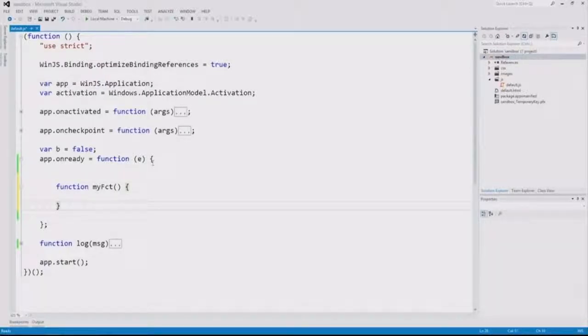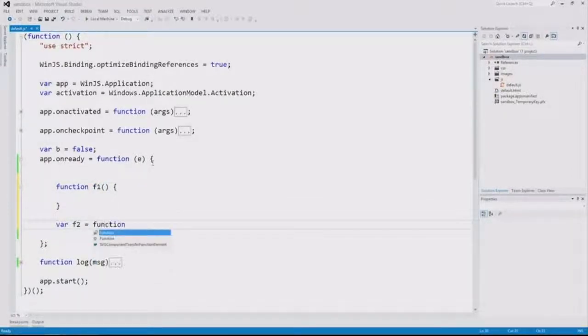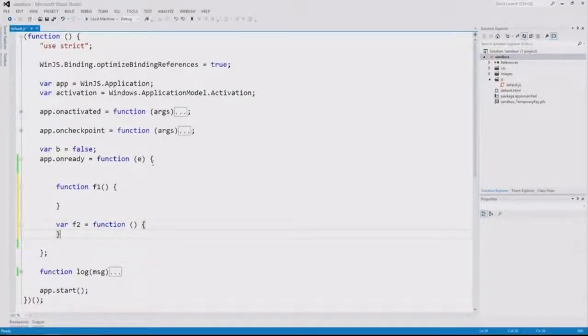But there's another way to define a function. And that would be like this. We'll call this first one F1. And we'll call our second one F2. So those are both valid functions. This one is called F2, and its value is a function. And this one is called F1, and it is a function.